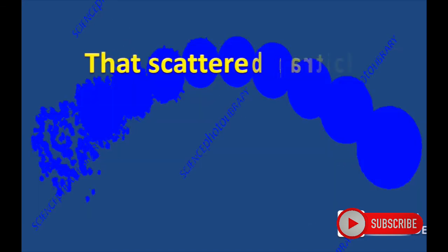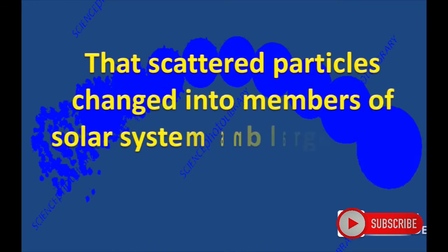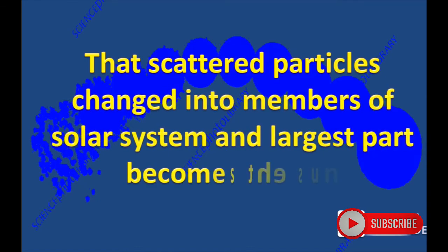The scattered particles changed into members of the solar system, and the largest part becomes the sun. Smaller particles or parts of the sun start to revolve around the sun.